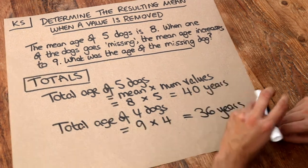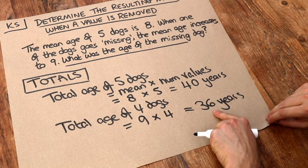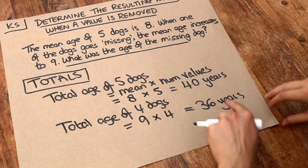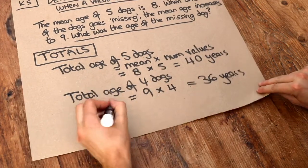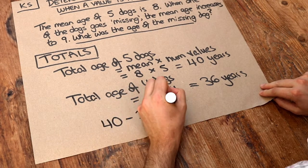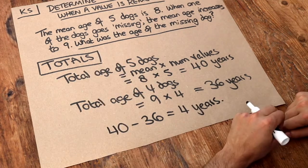So if the total age of the dogs before was 40, and now the total age of the remaining dogs is 36, then how old was the dog that went missing? Well, it must be the difference of the two. So if we just do 40 minus 36, that gives you four years, and therefore that was the age of the missing dog.